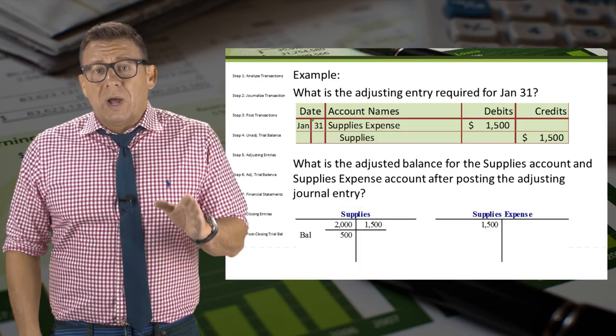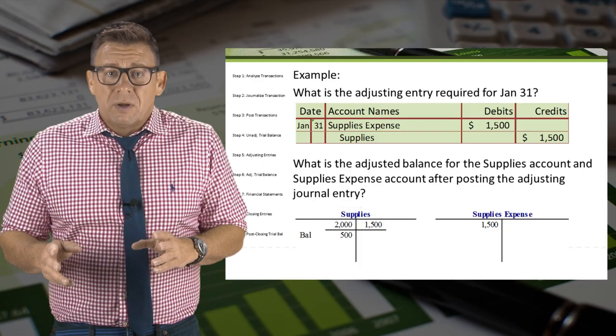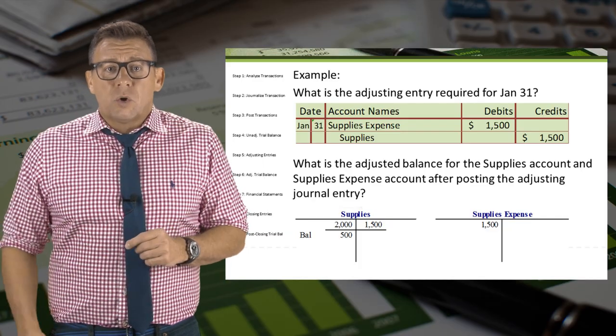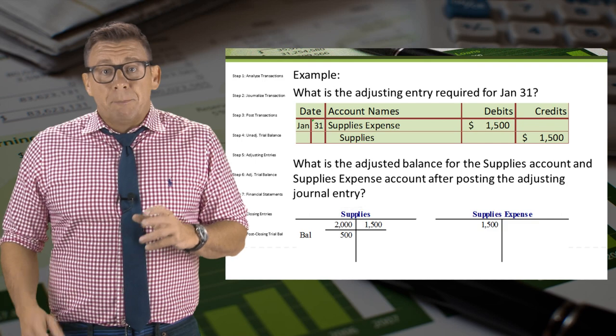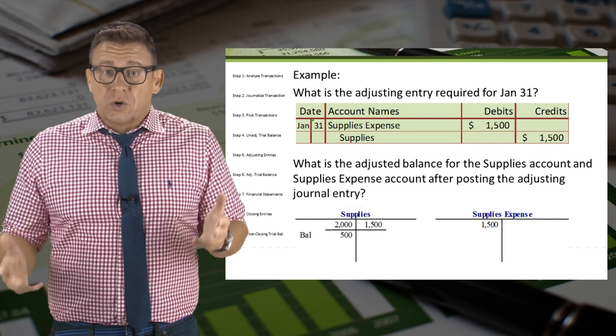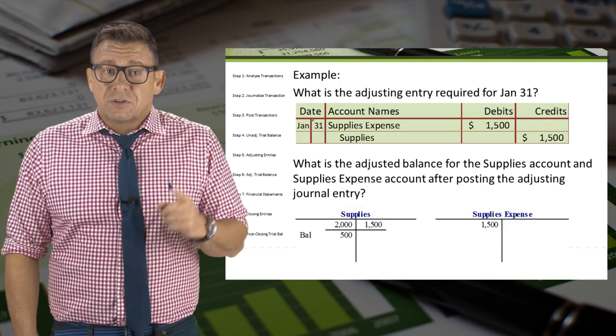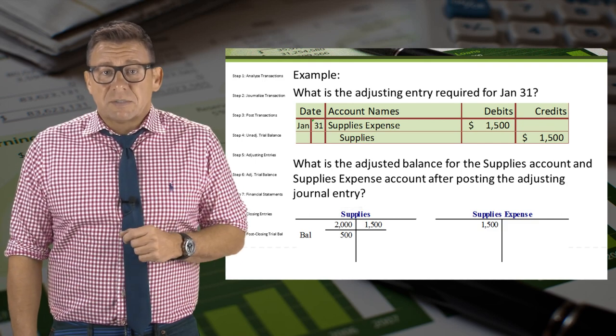So we must have used $1,500 of supplies. Once we know how many supplies were used up, we can record the adjusting journal entry and post them to the ledgers to arrive at the correct balances for supplies and supplies expense.